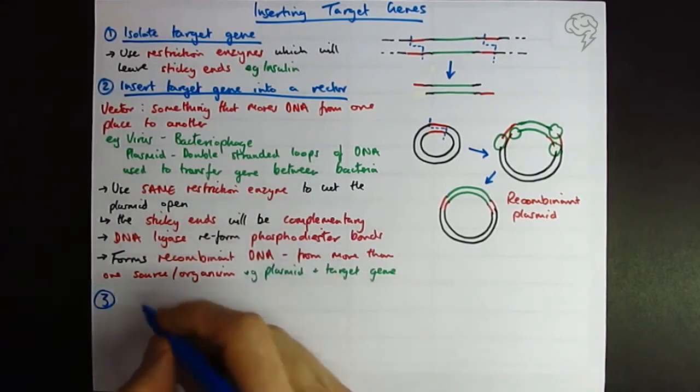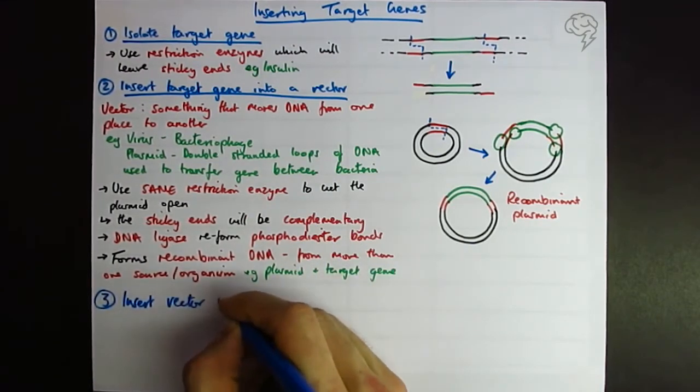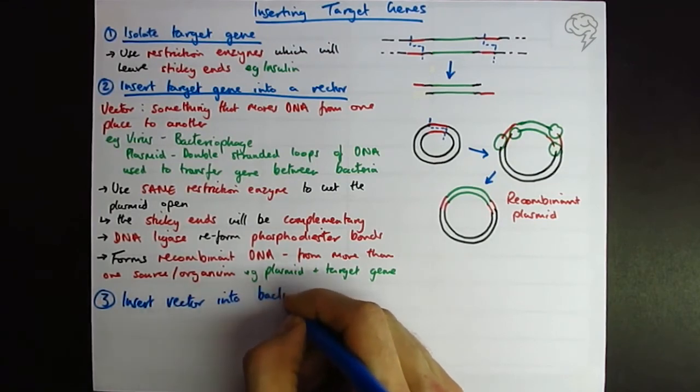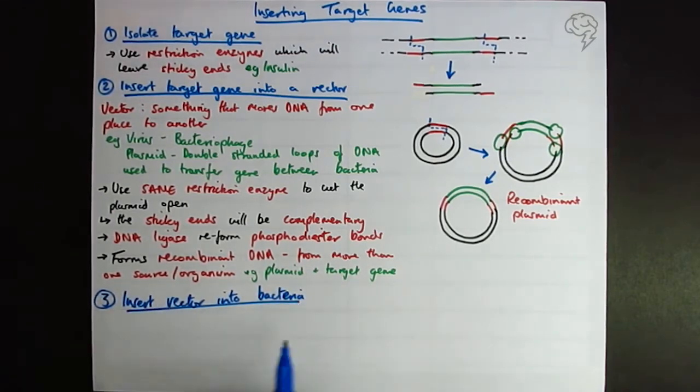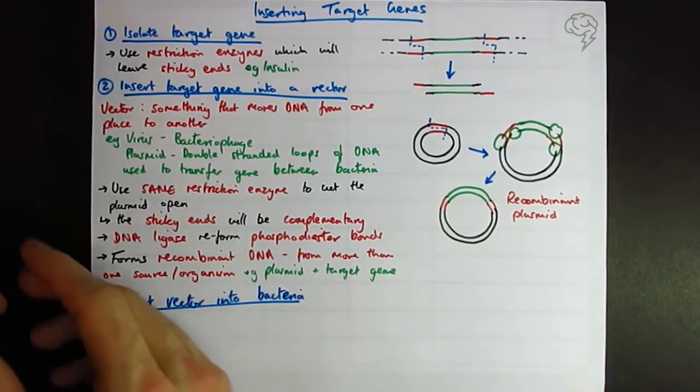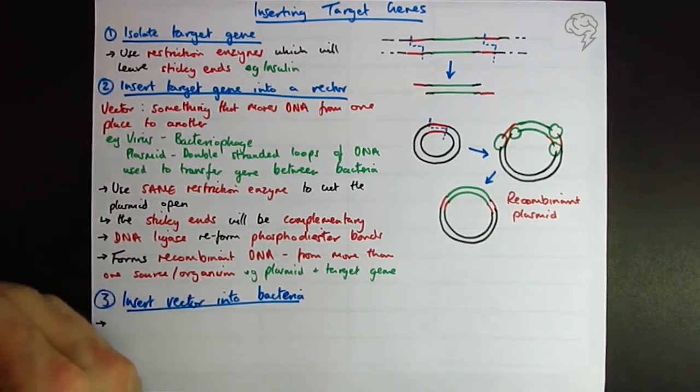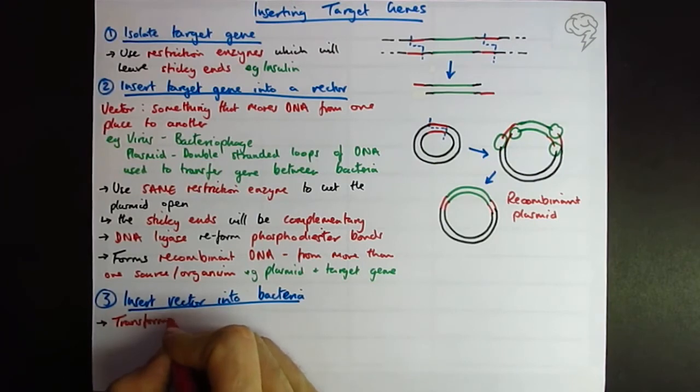Third and final step is inserting the vector into the bacteria. Okay, so any organism that contains recombinant DNA, DNA from more than one organism or source, we call a transformed organism. Another super important key term.